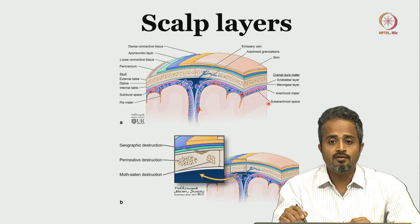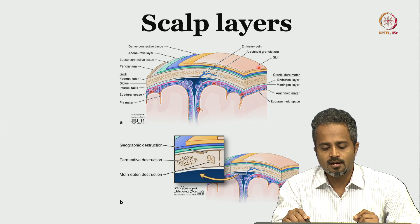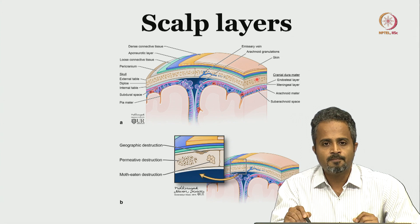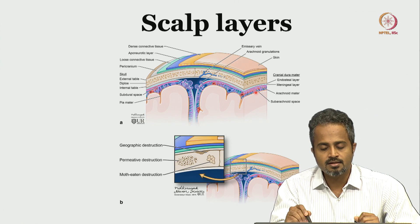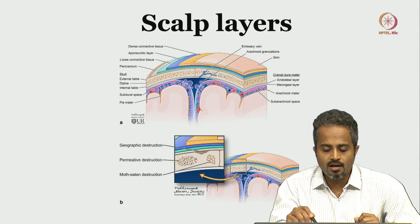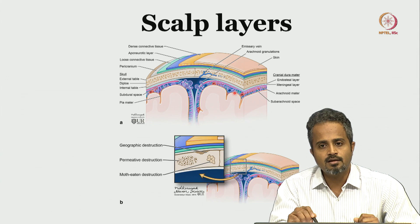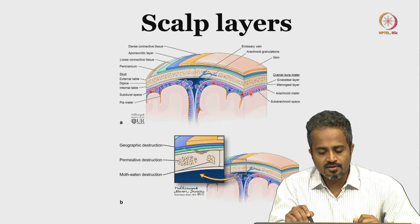Starting from outside inward: the skin, which is really thick and vascular; various layers of subcutaneous tissue; an aponeurotic layer; loose connective tissue; then the skull - a very protective thick layer of bone. Beneath the skull it is not directly the brain. Between the brain and skull is the potential space of the subarachnoid space, made of the arachnoid layer - a cobweb-like structure encasing multiple blood vessels supplying the brain.